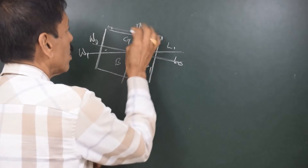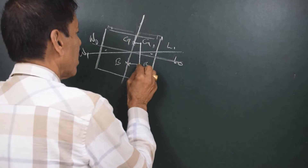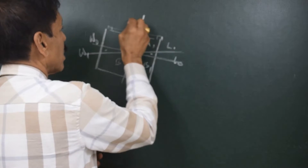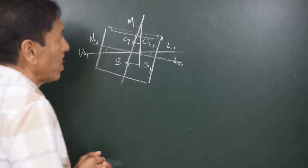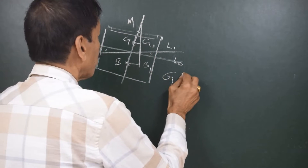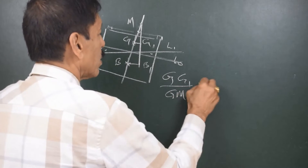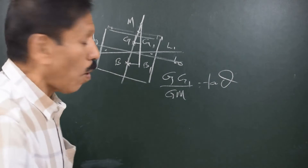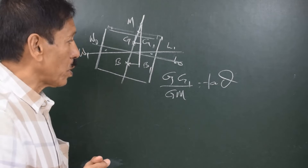Now for small angles of list, as the vessel inclines there is this meeting point which can be called the metacenter, and we can establish a relationship between GG1, GM, and theta. That relationship is: GG1 divided by GM is equal to tan theta. So this is the formula for list when the vessel is listed through small angles.